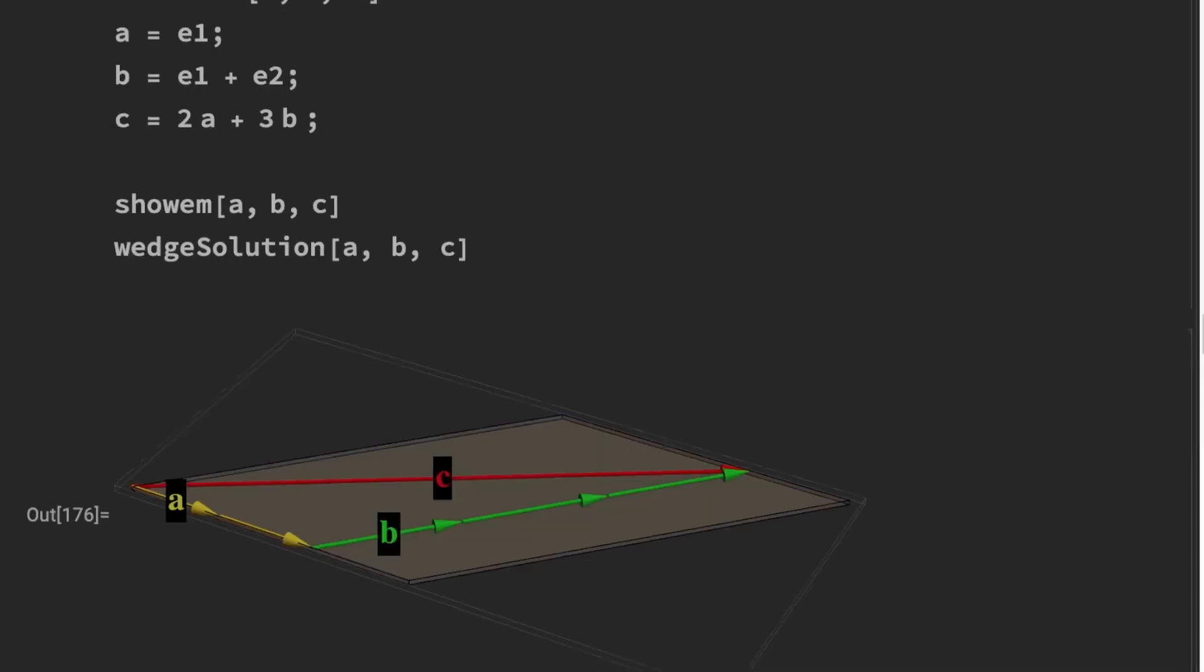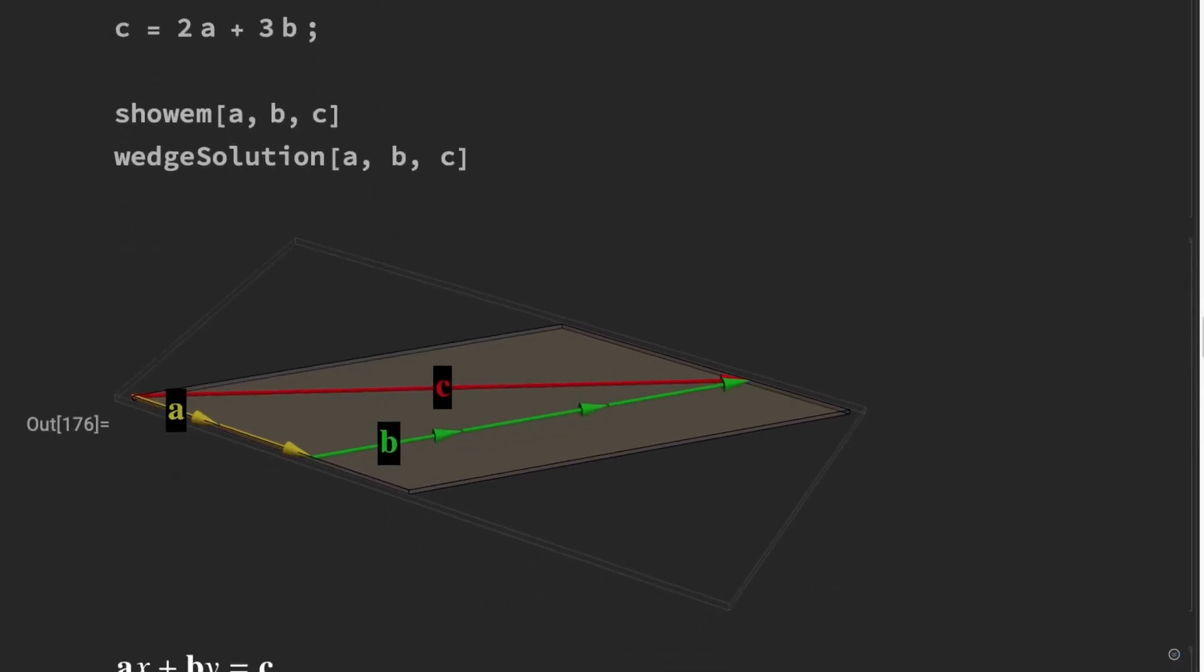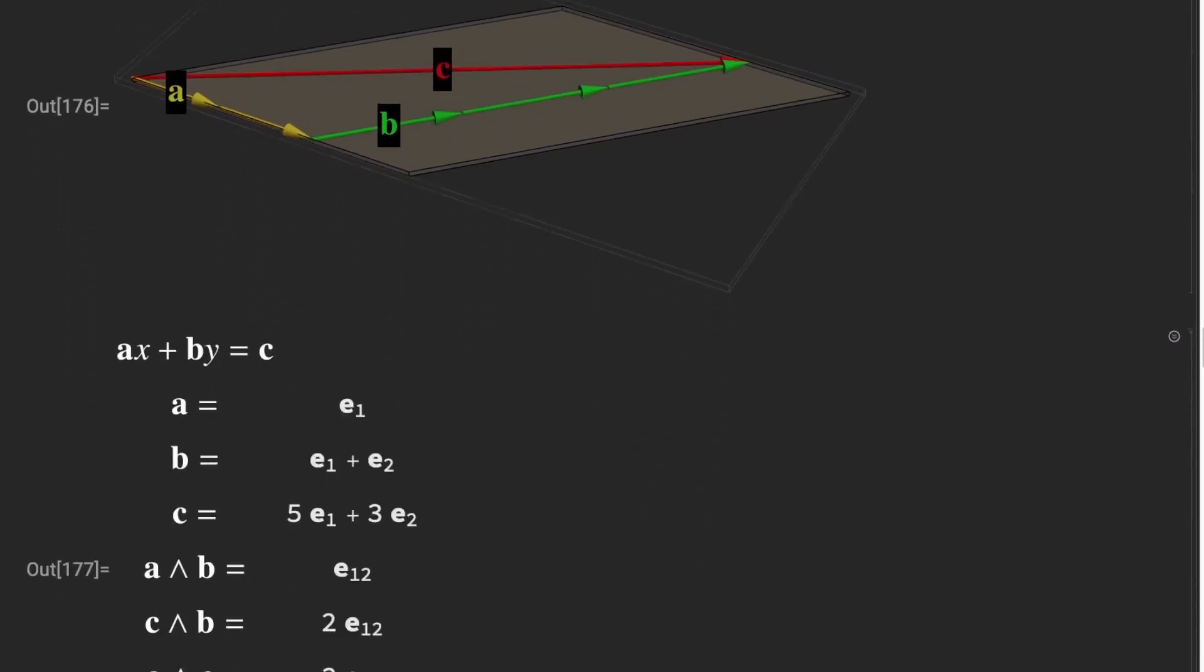Let's run that. Here's the illustration of the geometry of the problem. 2a plus 3b equals c and that's an exact solution. We expect an exact solution.